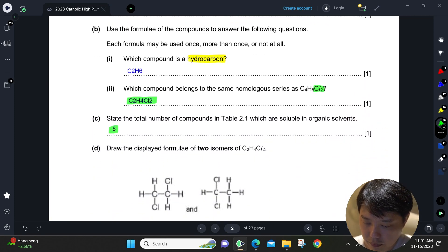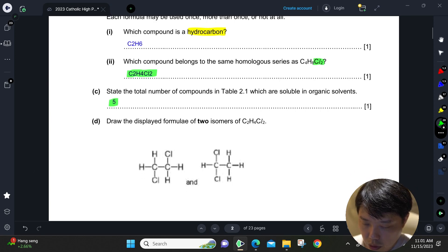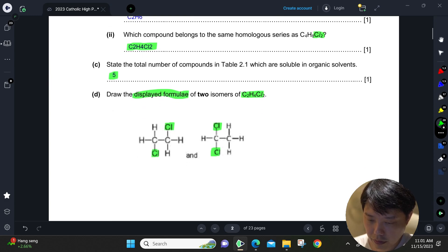Draw the displayed formula. Displayed formula means that you need to show every single bond. Two isomers of C2H4Cl2. So the first one will just do it on two different carbon atoms. The second isomer will just put it on the same carbon atom.